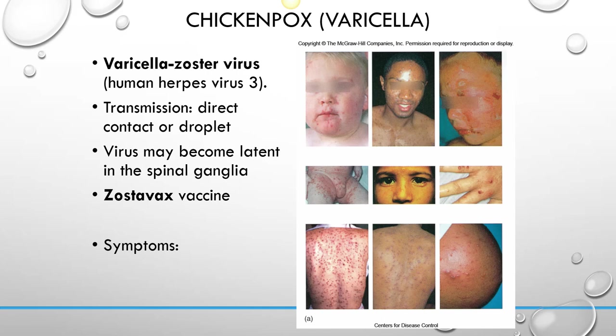Chicken pox is caused by the varicella zoster virus, which is a human herpes virus type 3. Transmission is through direct contact or droplet contact. When you get infected, it starts to infect the underlying layers of the skin deep in the stratum basale, causing lesions that look like blisters. It becomes really itchy, and when you scratch, you're spreading the virus to nearby areas — that's how it spreads so quickly.